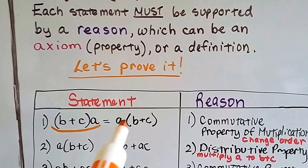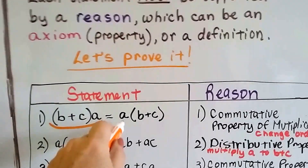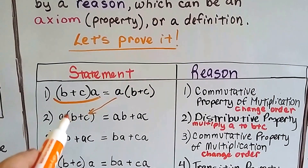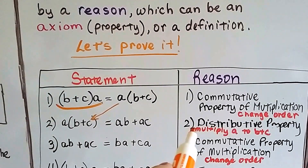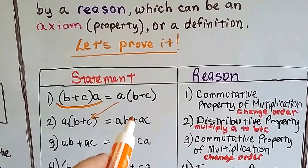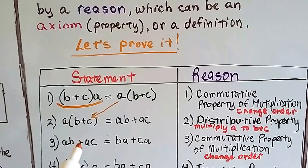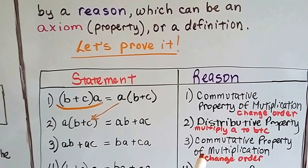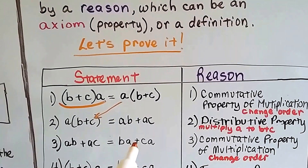Then we take a(b + c) and say it's also equal to ab + ac, because the distributive property says we can multiply a through to get ab + ac. We've now proven it could be this. Then ab + ac equals ba + ca because the commutative property of multiplication says we can change the order. So now we're at ba + ca.